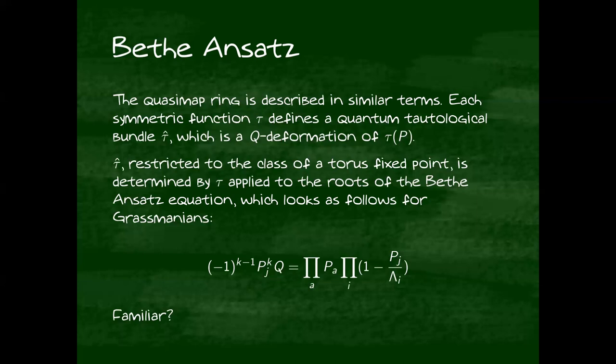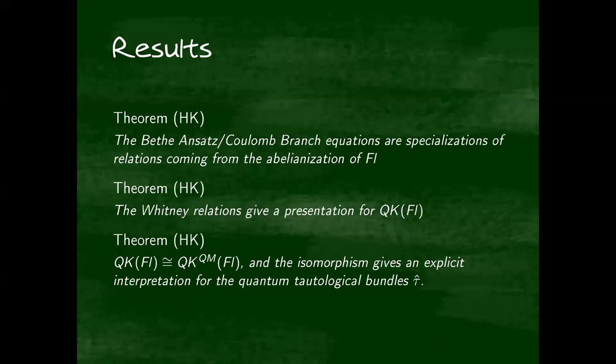So really, maybe this suggests that these equations mean something geometrically themselves, not just what you get when you symmetrize them. And that's basically the question I answer here, that these equations have a geometric interpretation. They come from the abelianization of the flag. I'll tell you what that is later. And as corollaries of these results, we can get a proof of the Whitney relations for all flag varieties, and we get an isomorphism between the quantum K-ring of the flag and the quasi-map quantum K-ring. And this isomorphism tells you something about these quantum tautological bundles, which are otherwise a little bit mysterious.